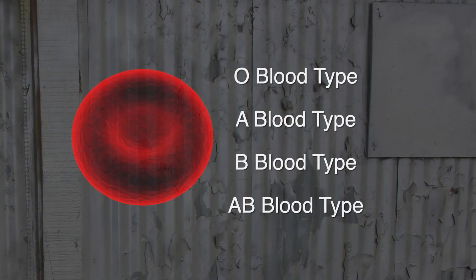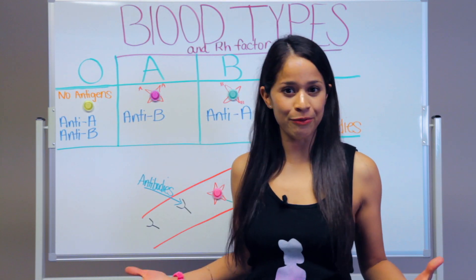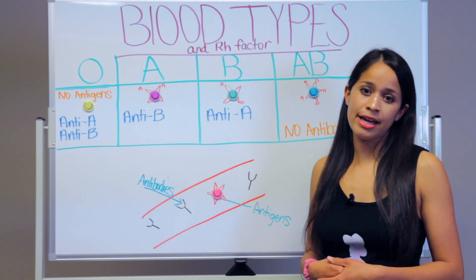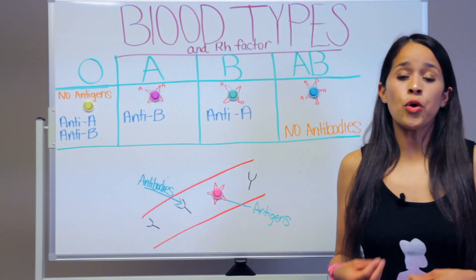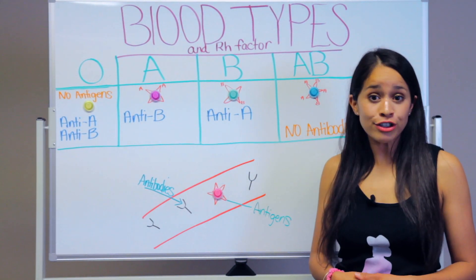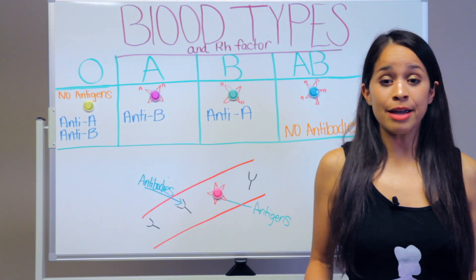There are eight different blood types. You have your O blood type, which is your universal donor, your A blood type, B blood type, and your AB blood type, which is your universal recipient. That's four blood types — where does eight come from? When you look at someone's blood type, it is followed with a negative or a positive sign. That positive or negative sign signifies the RH factor, so if you add a positive or a negative to each blood type, it makes eight.